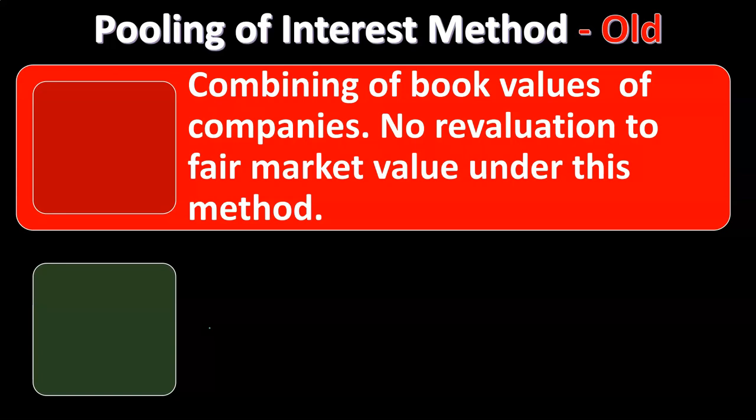Let's talk about the pooling of interest method — the old method that has been removed. We can no longer use the pooling of interest method. That's going to be the combining of the book values of companies, with no revaluation to fair market value under this method. Basically, if you're considering two separate legal entities that you need to merge, one way to think about it is you just take whatever the book values are and merge them together — that would be the pooling of interest method.